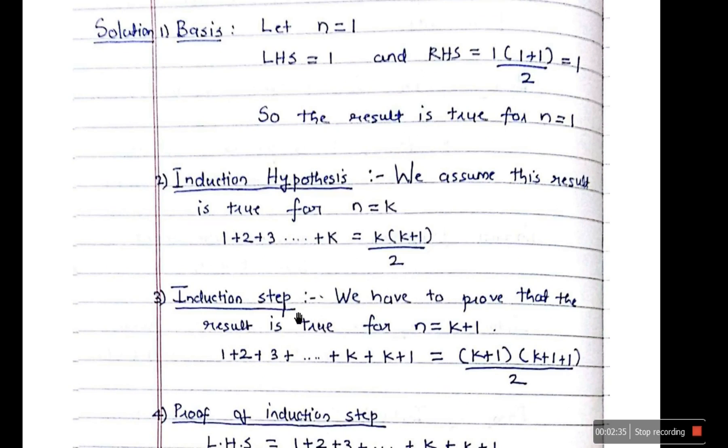Third step is induction step. So over here what we do is we prove that the result is true for n equal to k plus 1. So again what we have to do, we have to go for 1 plus 2 plus 3 plus 4 plus dot dot dot till k plus k plus 1. What will be the answer? Instead of k, you just replace it with k plus 1. So we get k plus 1 into k plus 1 plus 1, divided by 2. So you are replacing over here instead of k, you are going one more step. So it will be k plus 1 plus 1.